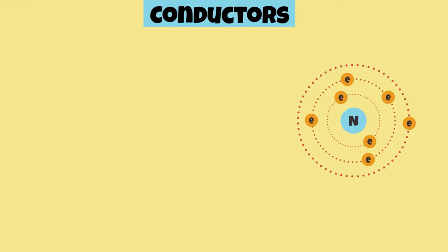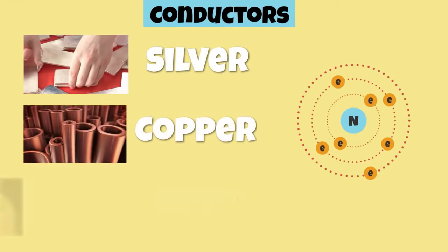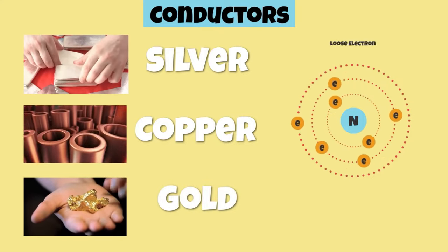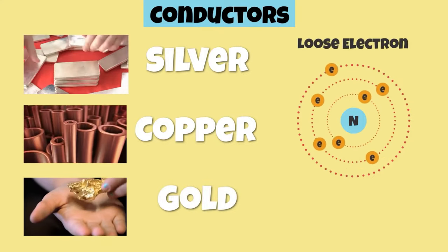Conductors such as silver, copper, and gold contain electrons that are loosely bound and allow them to flow with ease.